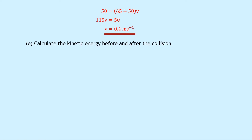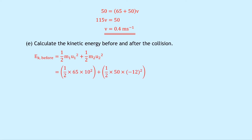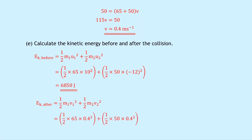Part e asks to calculate the kinetic energy before and after the collision. KE before = ½·m1·u1² + ½·m2·u2² = ½ × 65 × 10² + ½ × 50 × (−12)² = 6850 joules. KE after = ½·m1·v1² + ½·m2·v2² = ½ × 65 × 0.4² + ½ × 50 × 0.4² = 9.2 joules.